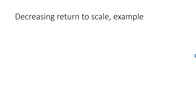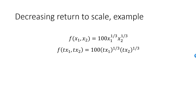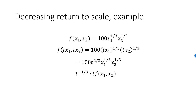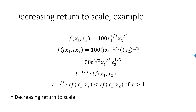Here is my final return to scale example. f of x1, x2 is equal to 100 times x1 raised to one third times x2 raised to one third. Substituting tx1 and tx2, this simplifies to 100 times t raised to two thirds times x1 raised to one third times x2 raised to one third. For t equal to 2, t raised to two thirds is approximately 1.59, so output has increased by only 59 percent — less than 100 percent — when we doubled inputs. Formally, this can be written as t raised to minus one third times t times f of x1, x2, and since t raised to minus one third is less than one when t is greater than one, return to scale is decreasing.